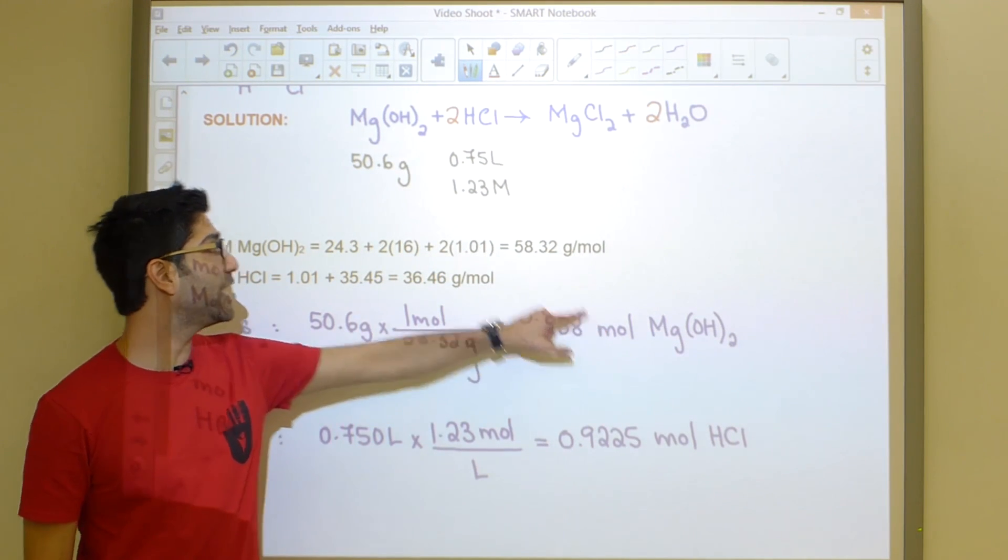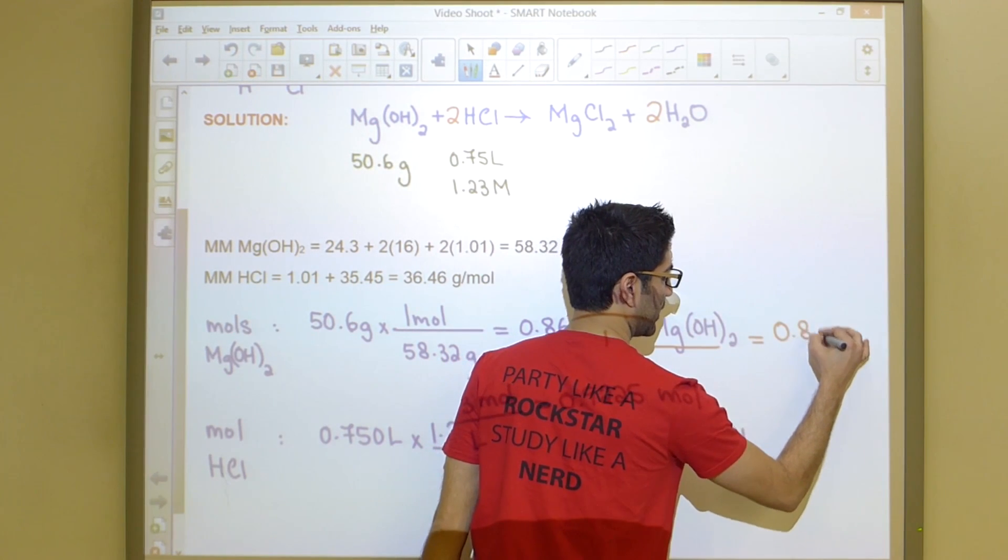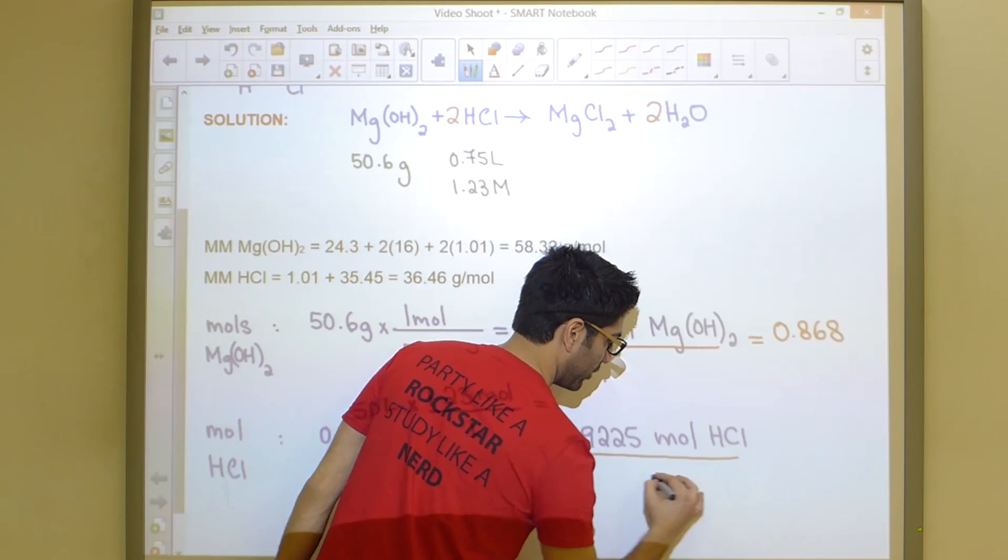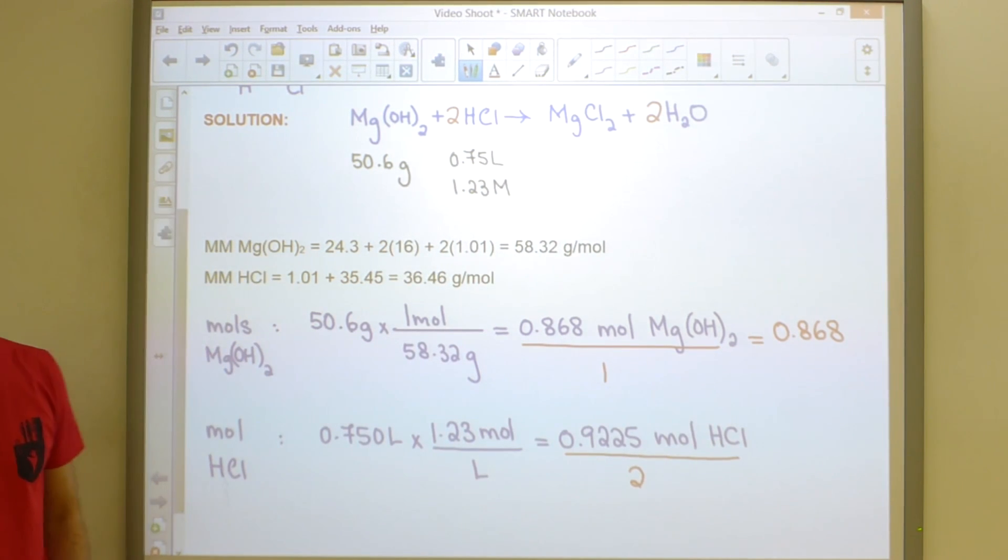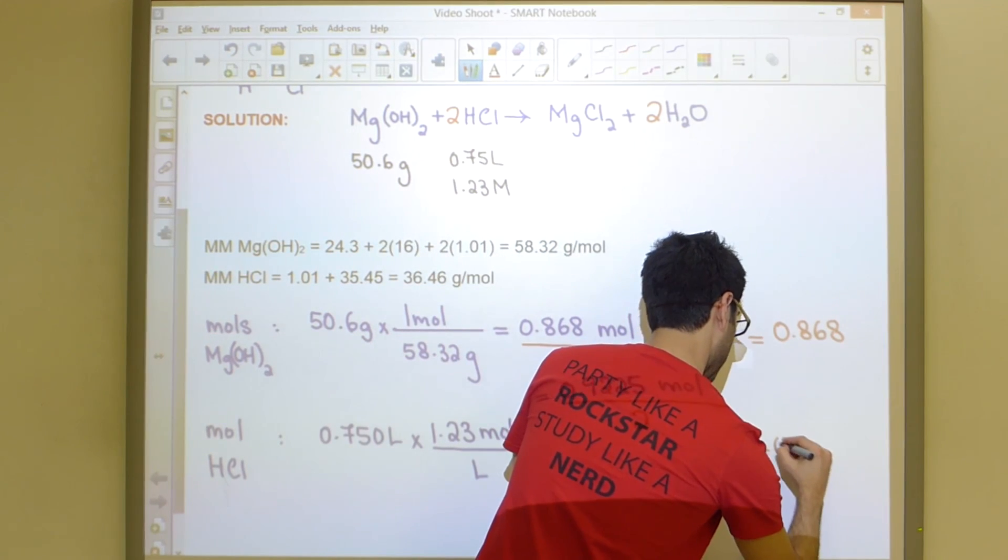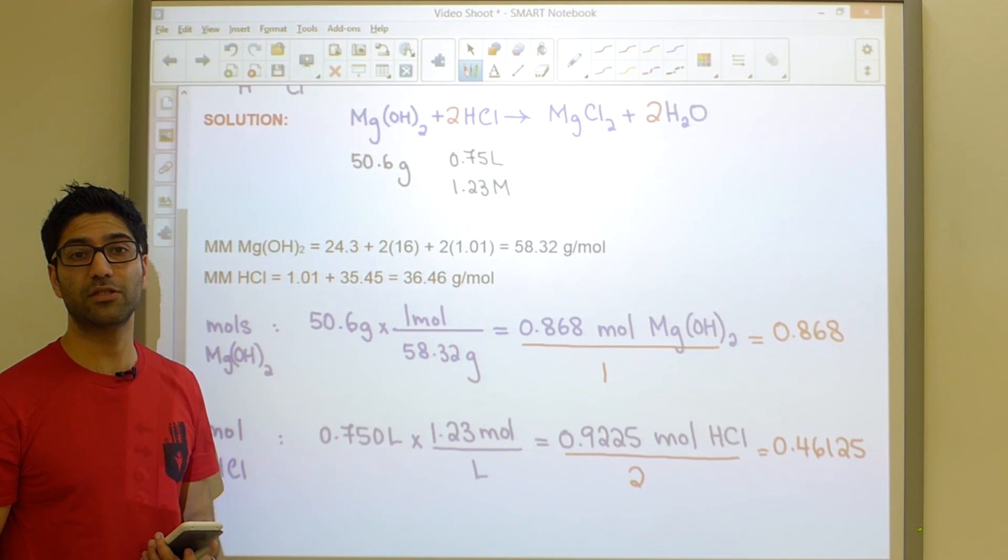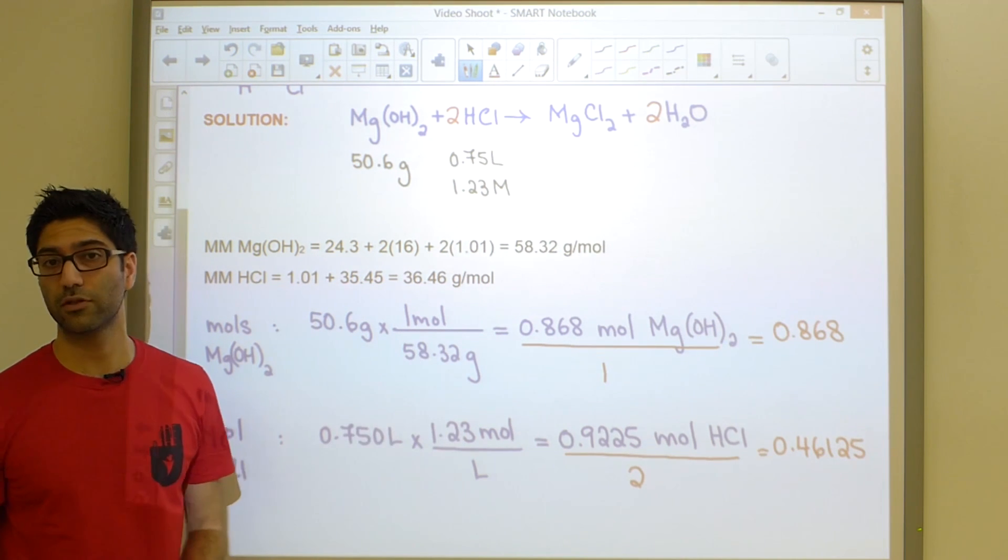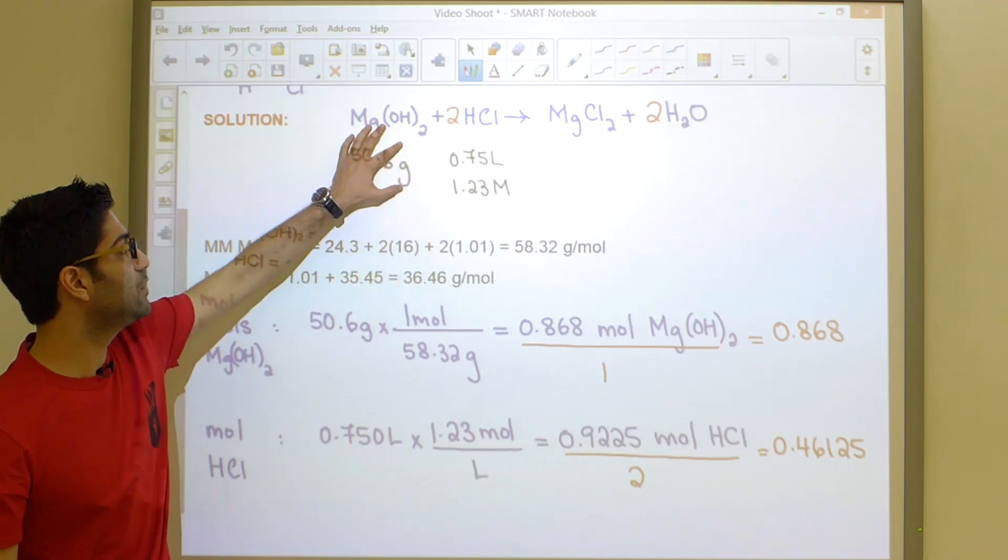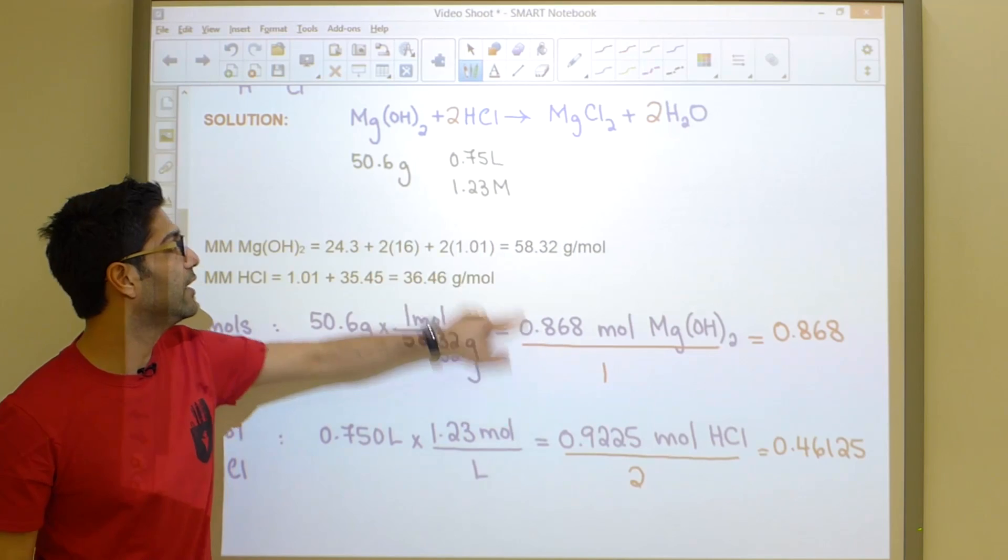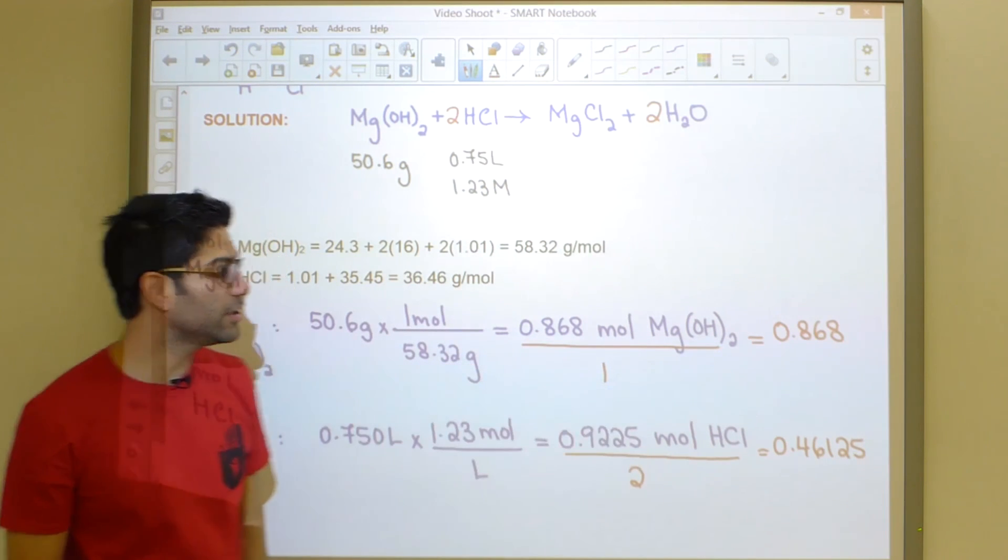I will divide this guy by the number in front here, or just one. Obviously, dividing this guy by one gives us the same answer, so 0.868. And the second one, I'm going to divide by its stoichiometric coefficient, in this case two. And if I calculate that, I'm going to get 0.46125. Here's the big trick: the smaller number represents the limiting reagent. Whichever number is smaller corresponds to your limiting reactant. It is that easy. You don't have to go any further. This works every single time.